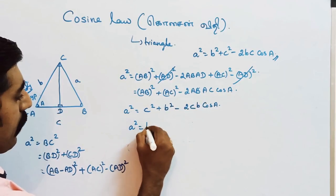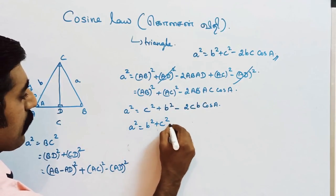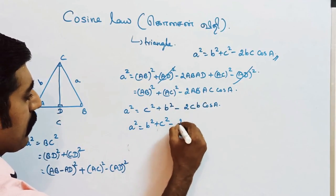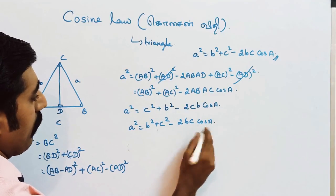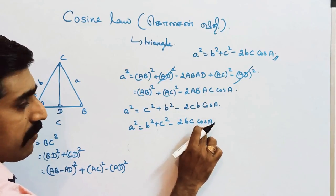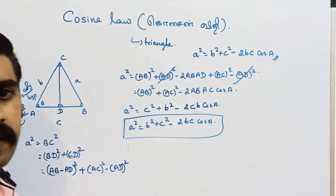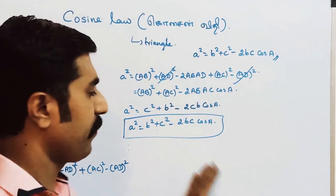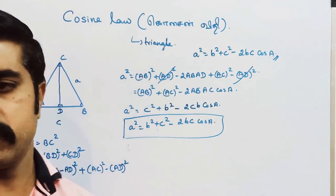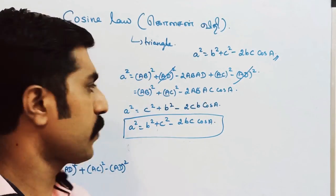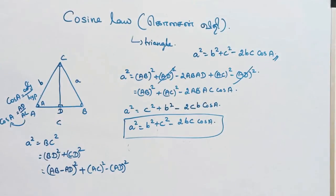So a² = b² + c² − 2bc·cos(A). This completes the derivation of the cosine law. I like this derivation and I have shown you the full proof.